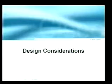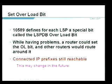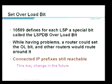Under design considerations, the set overload bit: historically from ISO 10589, the overload bit was set to indicate a router is busy. Since then, it has been modified — for example, when BGP is still converging. If I set the overload bit I cannot be used as a transit router — I'm telling everyone 'don't use me, I'm still learning routes.'